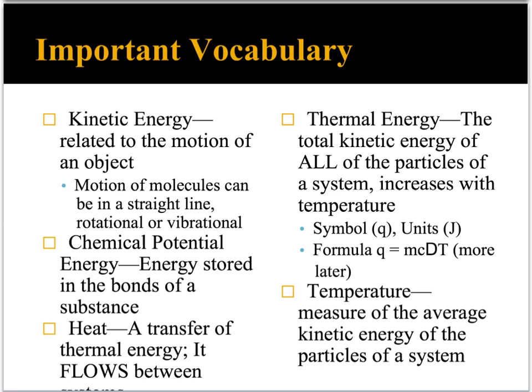Thermal energy is represented with the symbol Q. The units for that are joules. There's a formula: Q is equal to MC delta T, where delta T means change in temperature. We'll get into that formula a little bit more later.